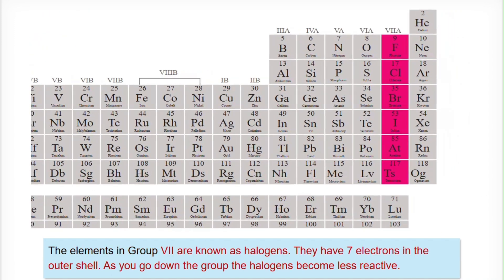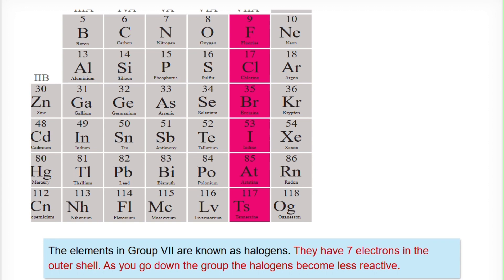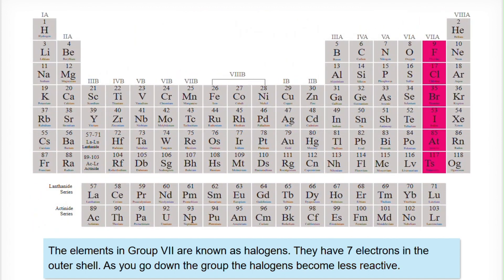The elements in group 7 are known as halogens. They have 7 electrons in the outer shell. As you go down the group, the halogens become less reactive.